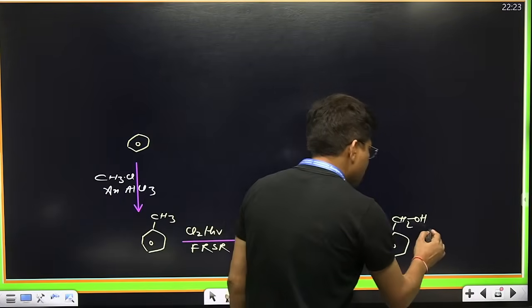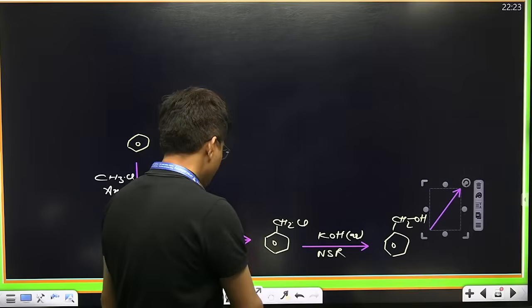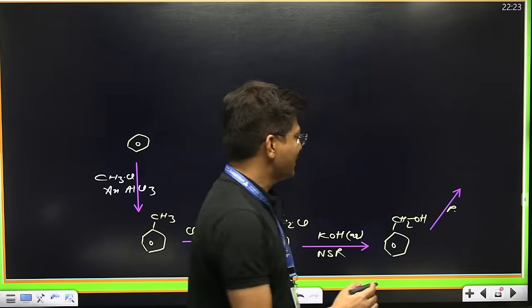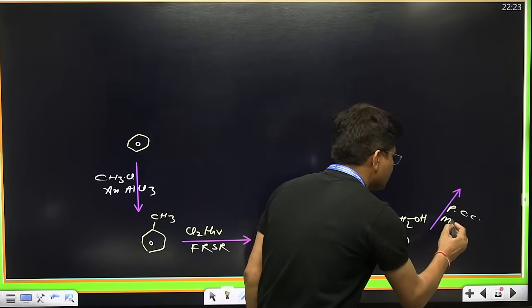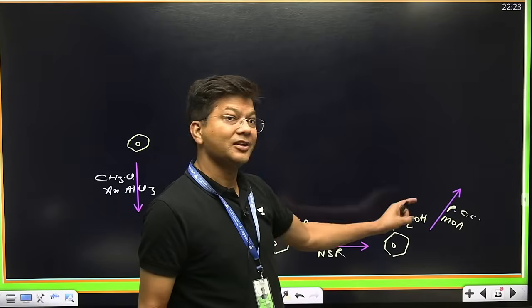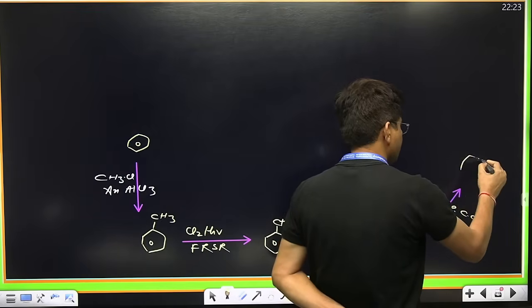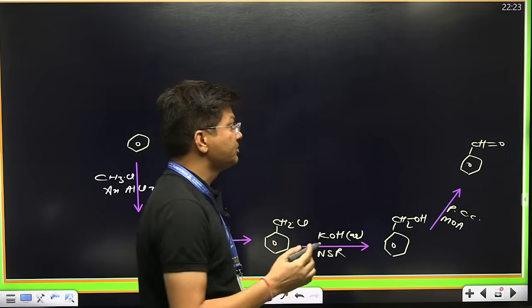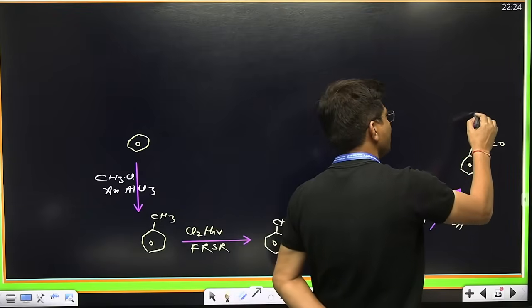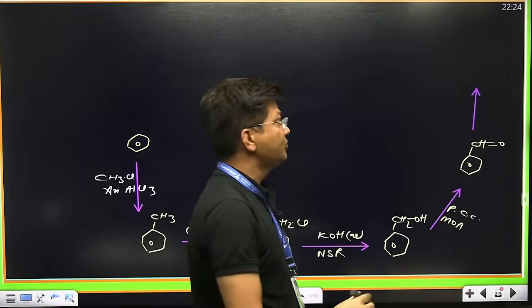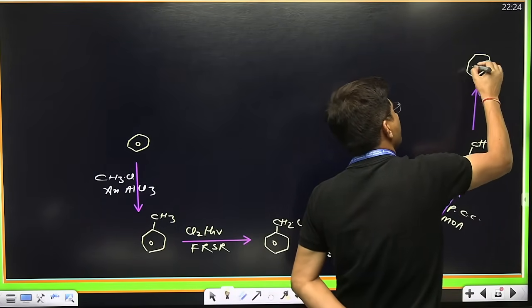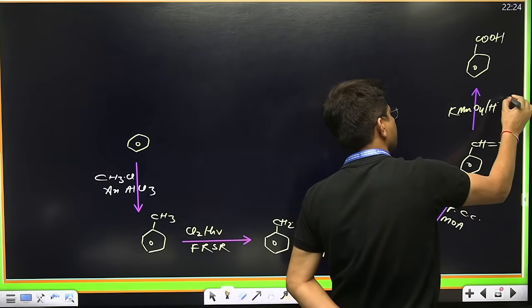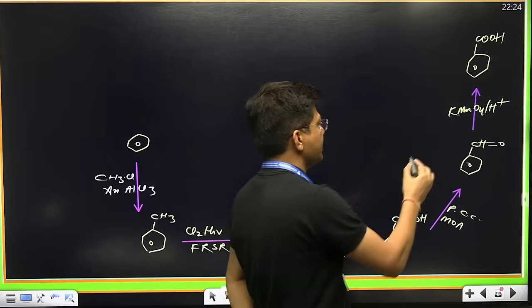This benzyl alcohol on reaction with PCC, pyridinium chlorochromate, a mild oxidizing agent, will get converted into benzaldehyde. This benzaldehyde with further oxidation using strong oxidizing agent like KMnO4 acidic medium will give you benzoic acid.